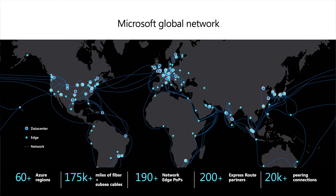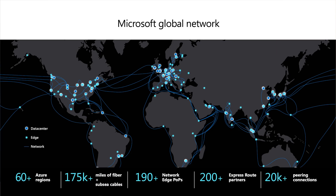Let's dive into Microsoft's global network. Microsoft's network is one of the biggest in the world. Microsoft's global network connects more than 60 Azure regions across five continents. Microsoft has more than 200 ExpressRoute partners providing private network connectivity from on-premises to the cloud. We also have more than 20,000 peering connections to serve traffic over the Internet to the end user. More than 175,000 miles of fiber connects these regions and edges to the Microsoft global network, built over the last 20 years and operated using software systems to react to failures as fast as possible.